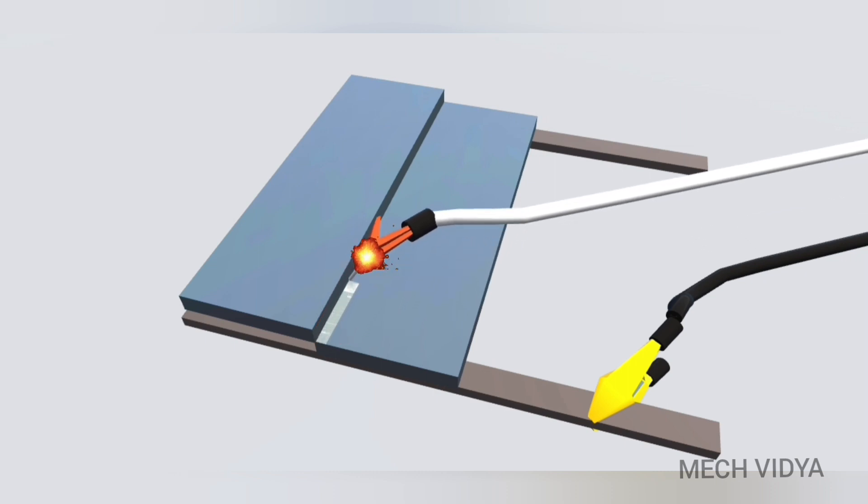Now we will maintain a small gap of about two to three millimeters so that the arc continues to spark, and then by moving the electrode linearly along the length, the welding is done.